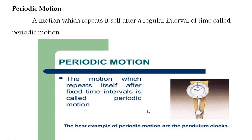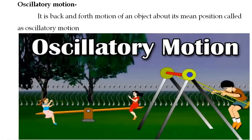Fifth, periodic motion: a motion which repeats itself after a regular interval of time is called periodic motion. The best example is a pendulum clock, which repeats itself after a fixed time interval.